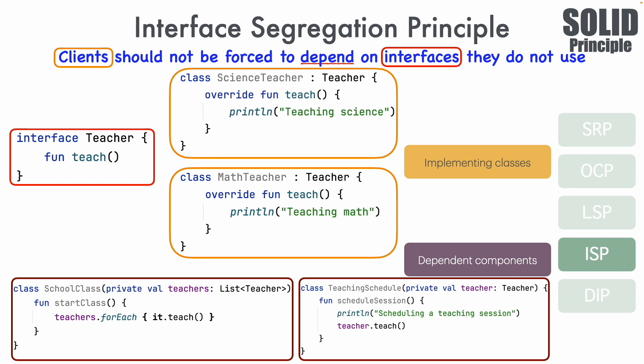Going back to the definition: when I say clients should not be forced, I mean the implementing classes and dependent components should not be forced to depend on interfaces they do not use. Now let's see what it means to violate this principle.